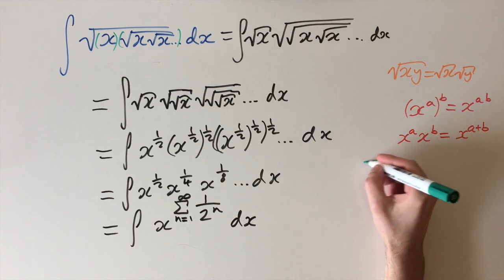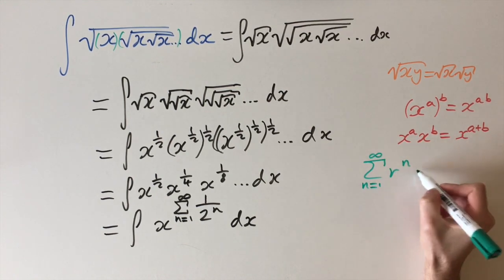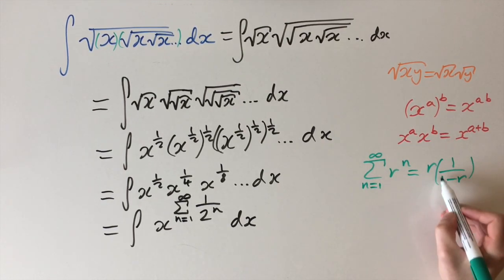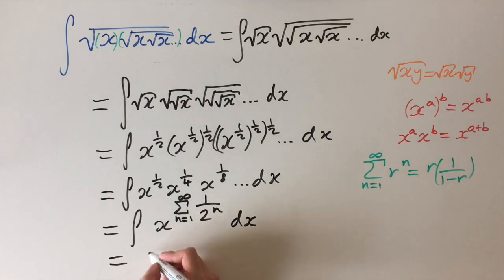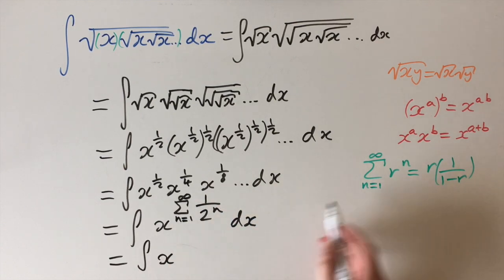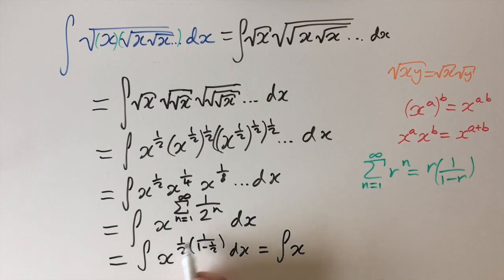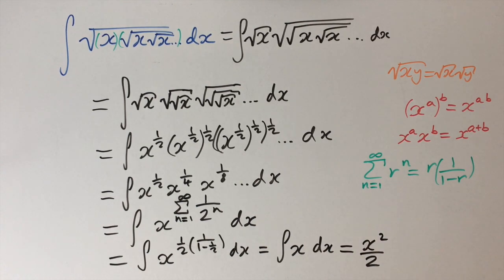The formula for the sum of a geometric series with ratio r, summed from n equals 1 to infinity, equals r times 1 over (1 minus r). The factor r in front is because we're starting at n equals 1 rather than 0. Applying this formula, we get the integral of x to the power of (1/2) times 1 over (1 minus 1/2) dx. Evaluating: 1 over (1 minus 1/2) is 1 over (1/2), and 1/2 times 1 over (1/2) equals 1. So we're left with the integral of x, which is simply x squared over 2 plus c.